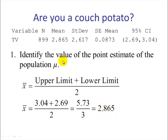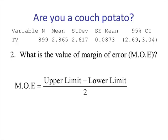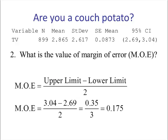This agrees with the Minitab printout. You may be thinking, why do we go through this if we already had the answer? Well, sometimes we're just given only the confidence interval, and this is how we can find the point estimate. Number 2: what's the value of the margin of error? Using our formula — upper limit minus lower limit divided by 2 — we get 0.175.